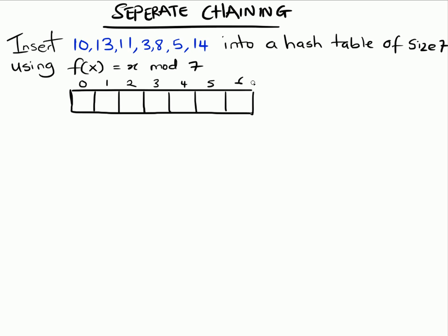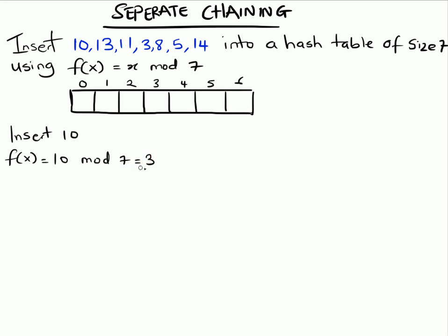We have our array here and we're going to start inserting from the first value. To insert 10, we're going to use the function x mod 7, where x is 10. So 10 mod 7 equals 3, and we're going to insert that at position 3.